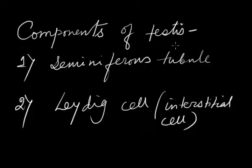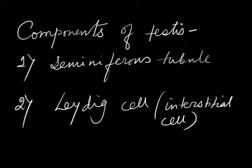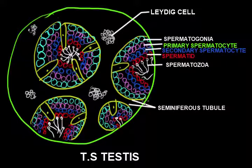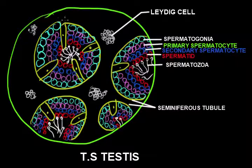The components of testes: testes are basically composed of the seminiferous tubule and the Leydig cell — these are the basic structural components. This is the transverse section of testes, from which you may get a detailed knowledge. These round-shaped structures are the seminiferous tubules, and in between the space of seminiferous tubules there is a cluster of cells called Leydig cells.